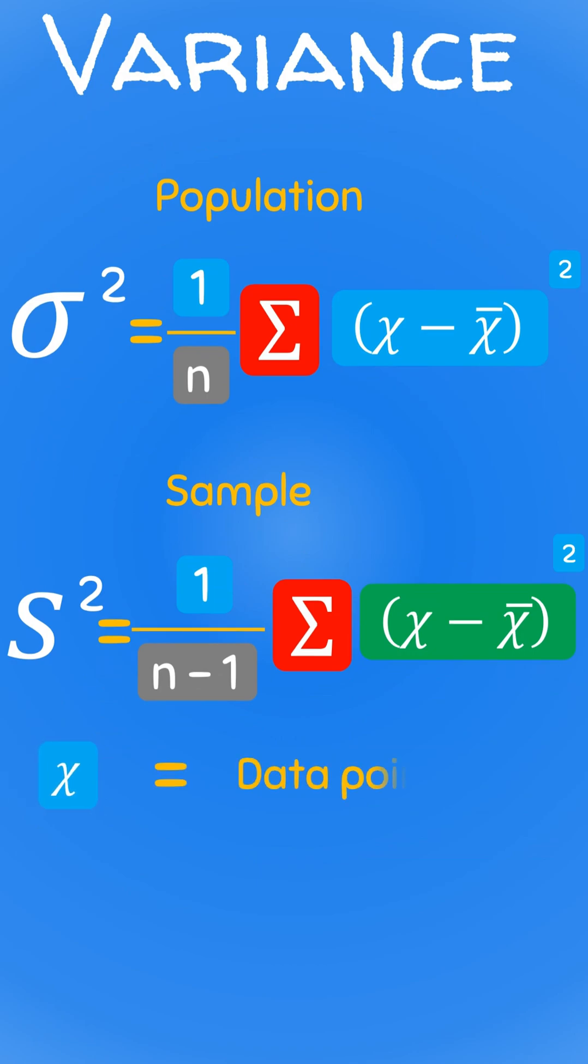Where x represents each data point in the data, x bar represents the mean of the data points, while n represents the number of data points.